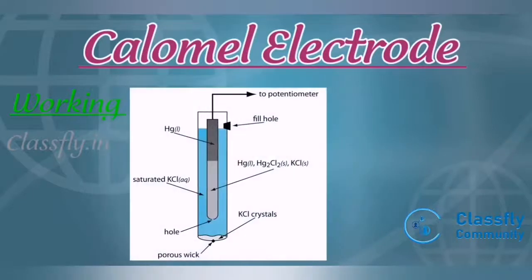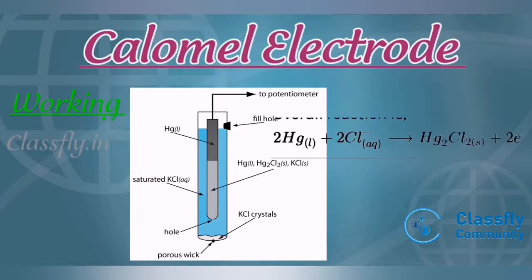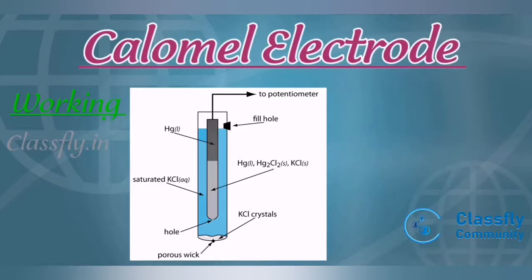The calomel electrode can act as both anode and cathode depending on the electrode with which it is combined. If the calomel electrode acts as an anode, the overall anodic reaction is: 2Hg + 2Cl⁻ → Hg₂Cl₂ + 2e⁻. Here, mercury undergoes oxidation to liberate two electrons.